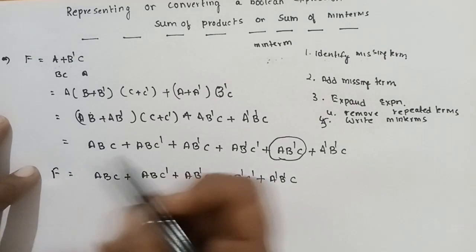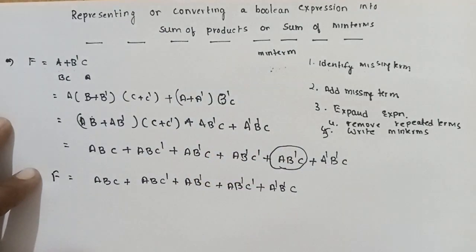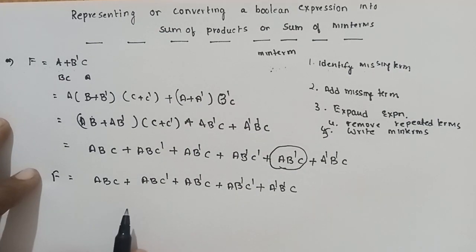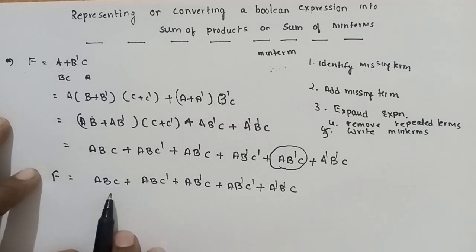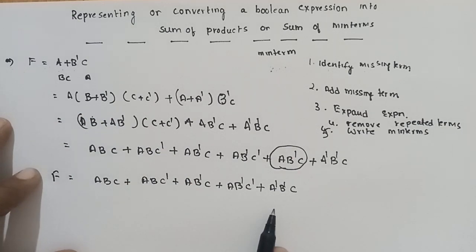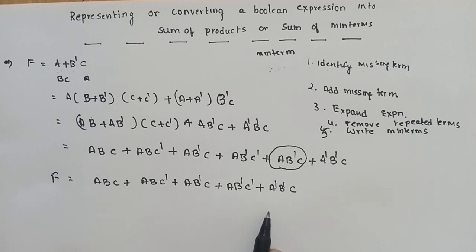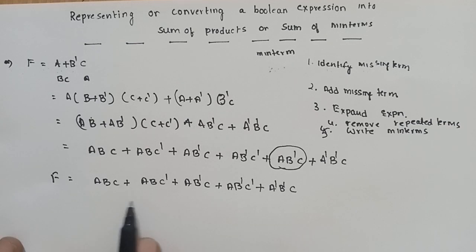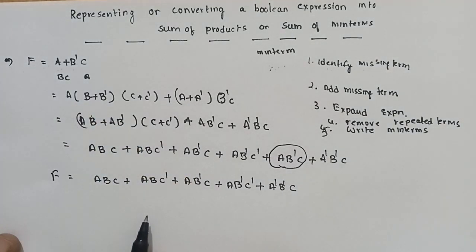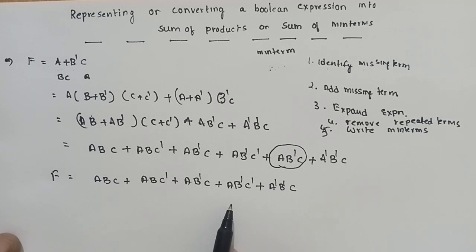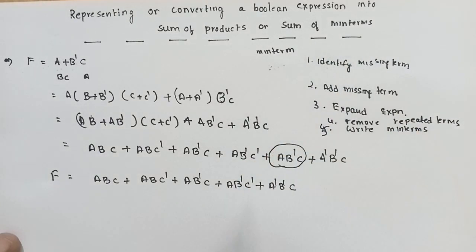Converting a Boolean expression into the sum of products form — so this is the sum of products. It is in the rule sum of products form. Each minterm should contain all the variables of the function. The function has 3 variables: A, B, C. Every minterm should have each variable either in the true form or complement form. Here is the sum of products form. The sum of minterms is the next step.